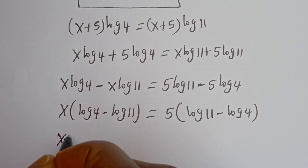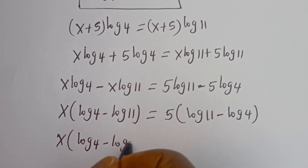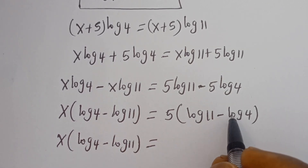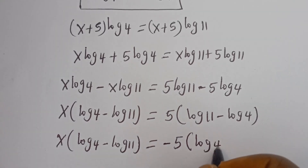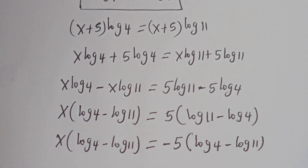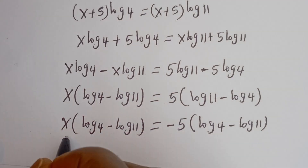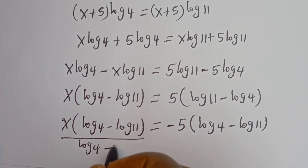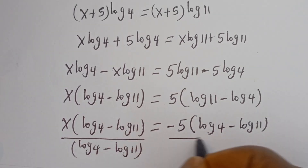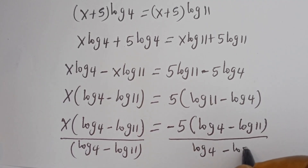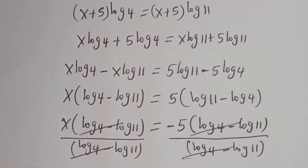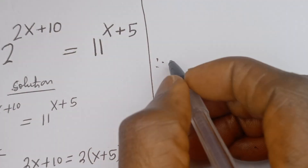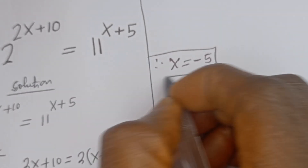We have x times (log 4 minus log 11) is equal to minus 5 times (log 4 minus log 11). Dividing both sides by (log 4 minus log 11), this cancels on both sides. Therefore x is equal to minus 5, and this is the final answer.